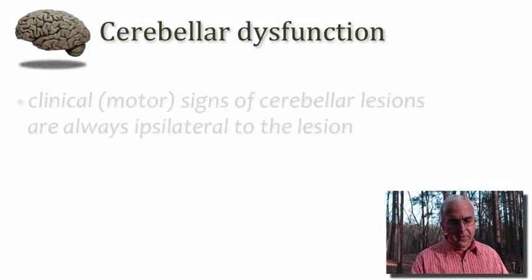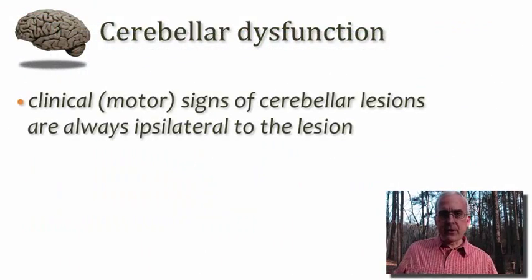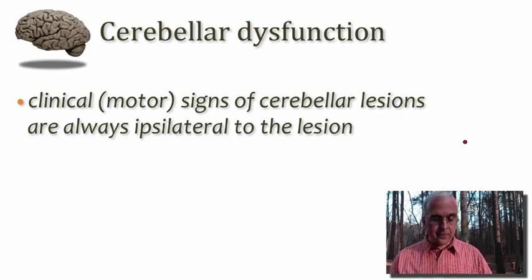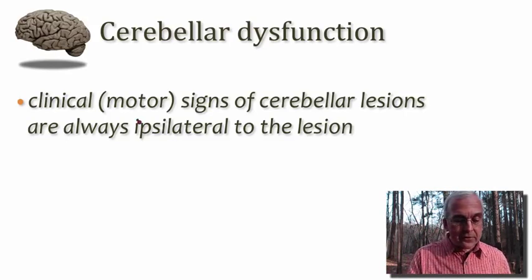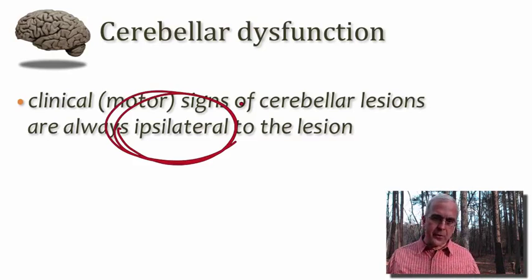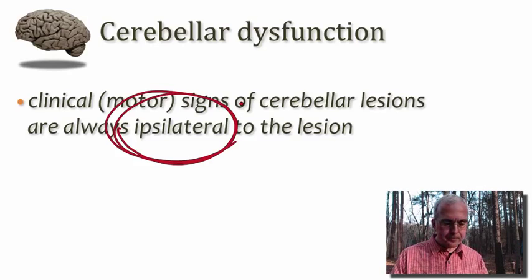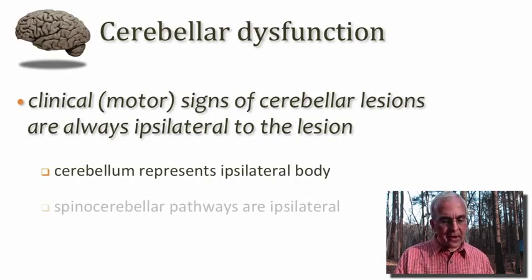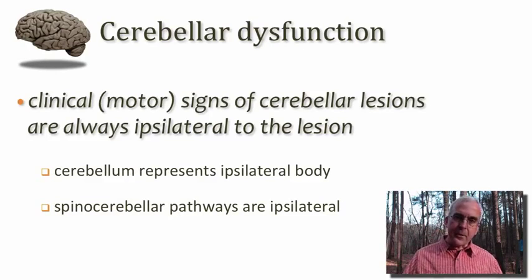The cerebellum coordinates movements of the body and also assists in coordinating movements of the mind, so it should not be surprising that clinical populations with cerebellar injuries may have deficits in the cognitive domain as well as in motor control. Since the cerebellum principally governs the ipsilateral side of the body, deficits are observed in movements of the ipsilateral side. The clinical signs of cerebellar lesions are always ipsilateral to that lesion — in contrast to damage to upper motor neurons, where clinical signs are contralateral to the injury.